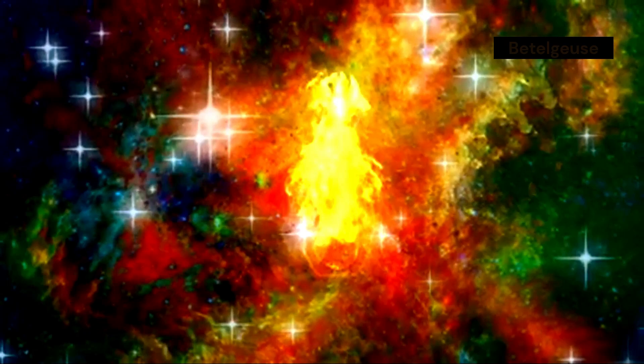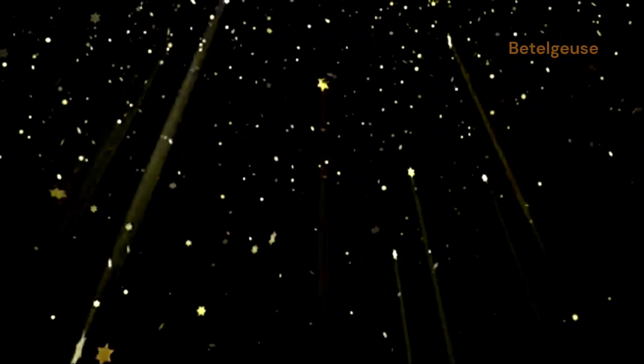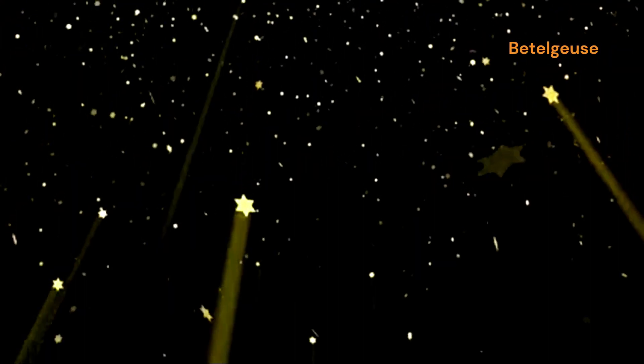One possibility is that Betelgeuse is experiencing a massive outburst of energy from its core. As the star burns through its remaining fuel, it can become unstable, prone to sudden surges in energy output. These surges can manifest as increases in brightness.